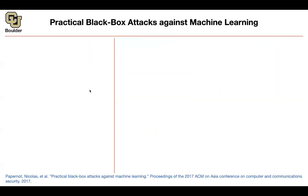We can move on to black box attacks. So far, what we have been doing was under the assumption that you have access to your neural network — to the parameters, hyperparameters, and structure of the neural network you're attacking. Our life was easier because you could look at your neural network and decide what to do with it. But what if you don't have access to the neural network you're trying to attack? That's a black box to you.